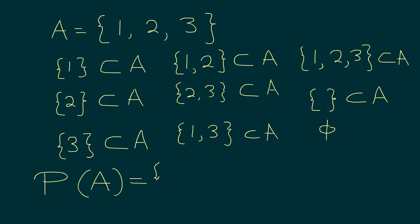So if I have to write the power set, it will contain: the first set {1}, the second one {2}, the third one {3}, and then we have the three two-element sets {1,2}, {1,3}, and {2,3}. Then we have {1,2,3}, and don't forget the null set or empty set.